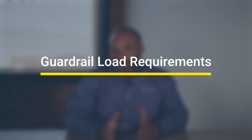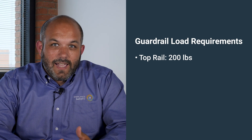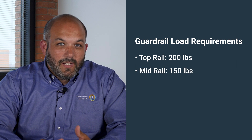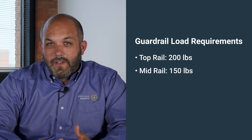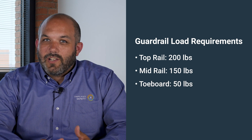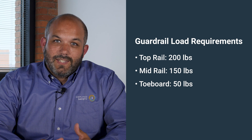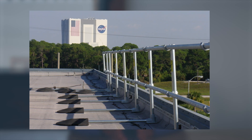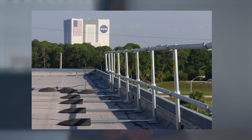The last thing we're going to talk about are the load requirements. Your top rail needs to be able to withstand a concentrated load of 200 pounds, your midrail 150 pounds, and your toe board 50 pounds — all in the downward and outward directions. When you apply this load to the top rail in the downward direction, it cannot deflect below a height of 39 inches. This is important if your top rail already starts at the 39-inch height, because any deflection — even a quarter inch — would make that guardrail non-compliant.